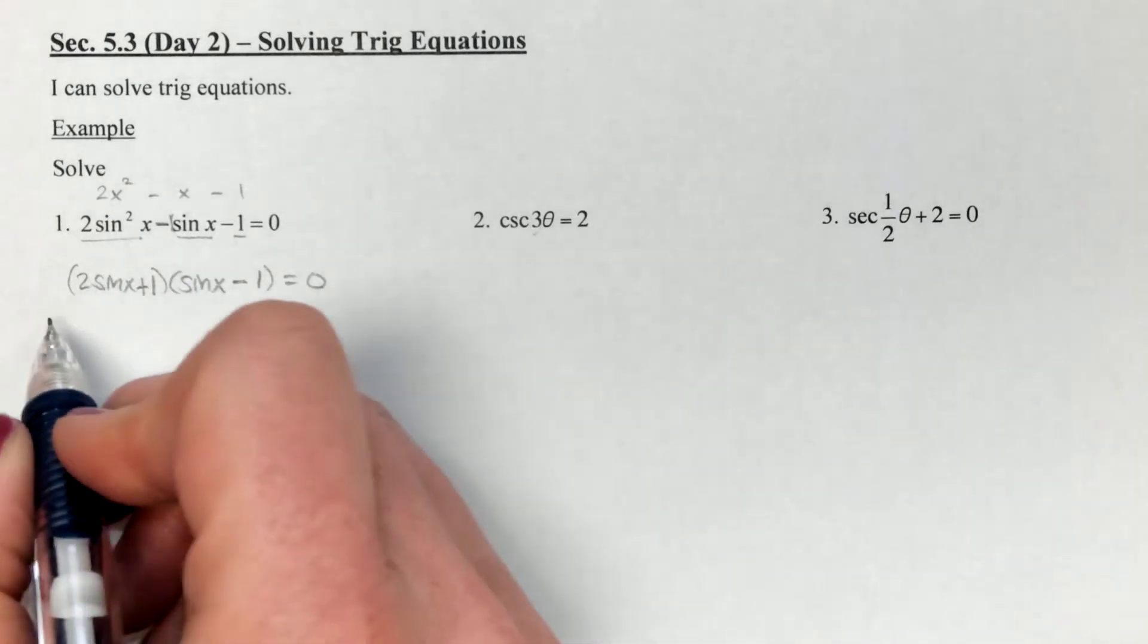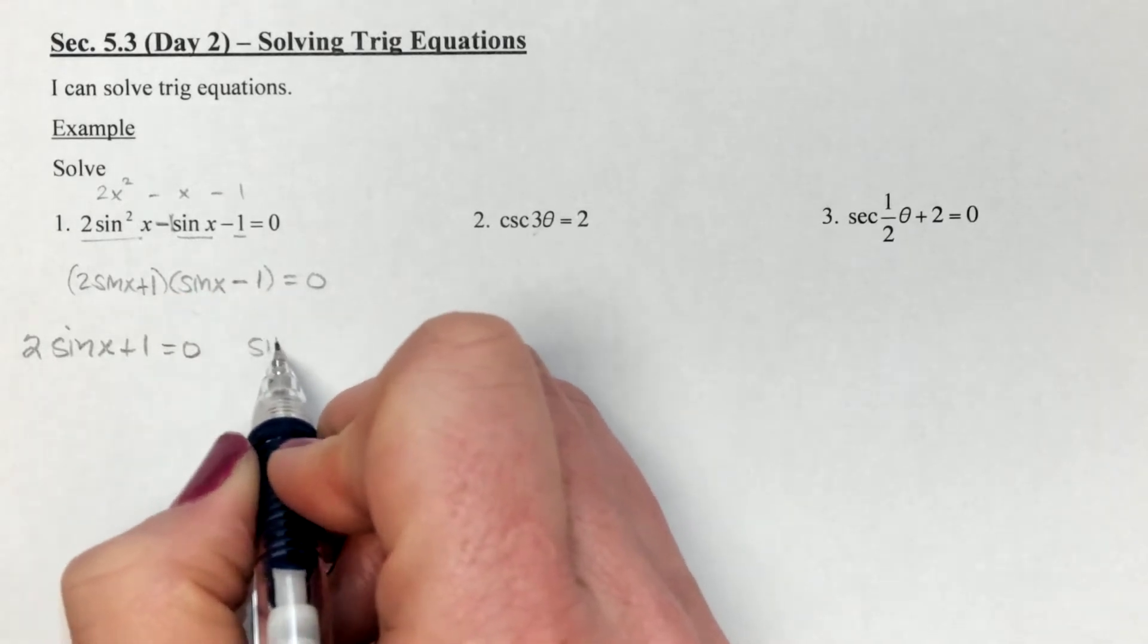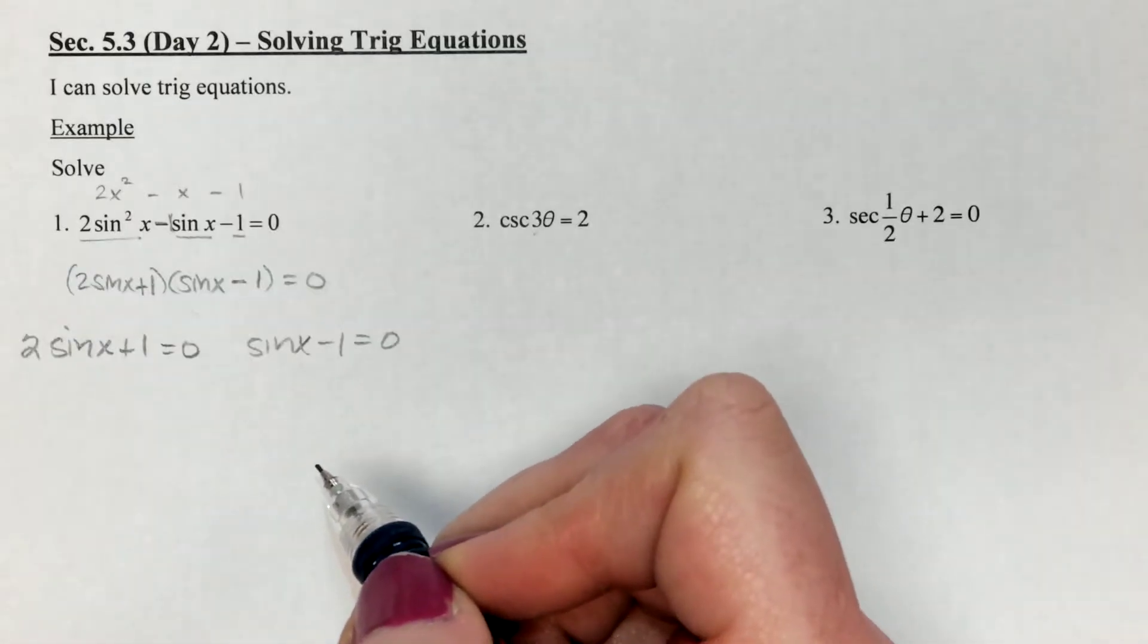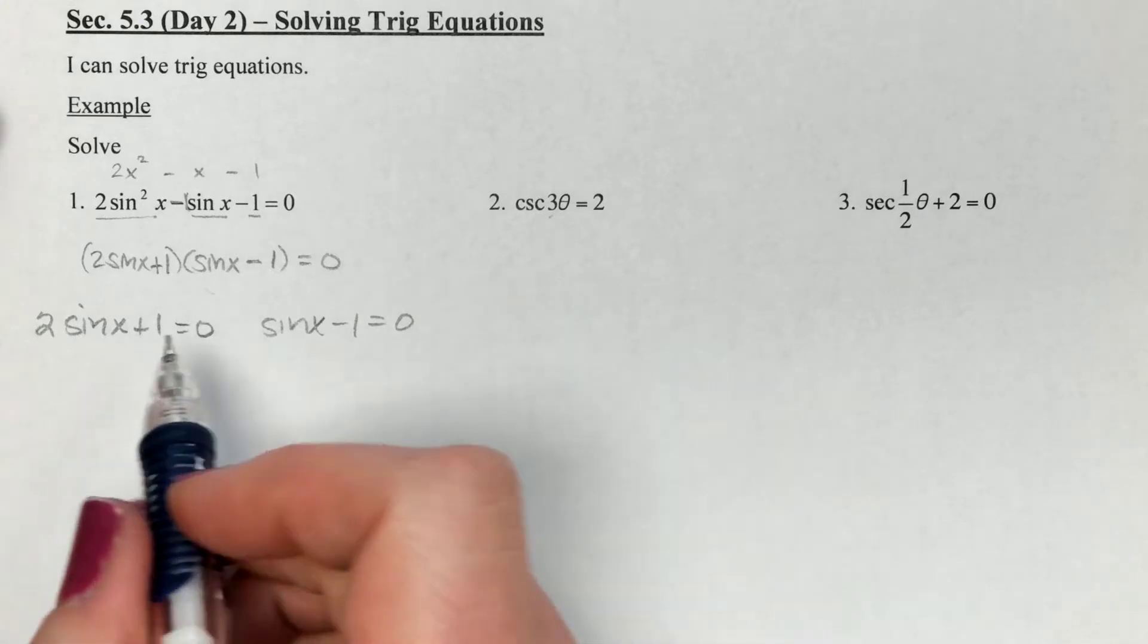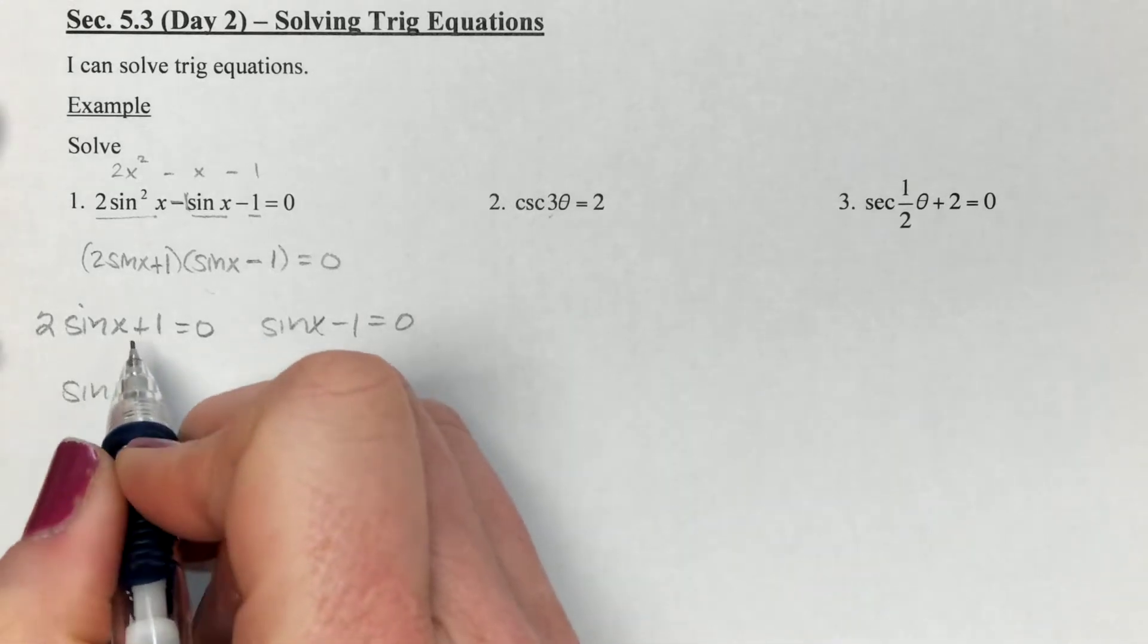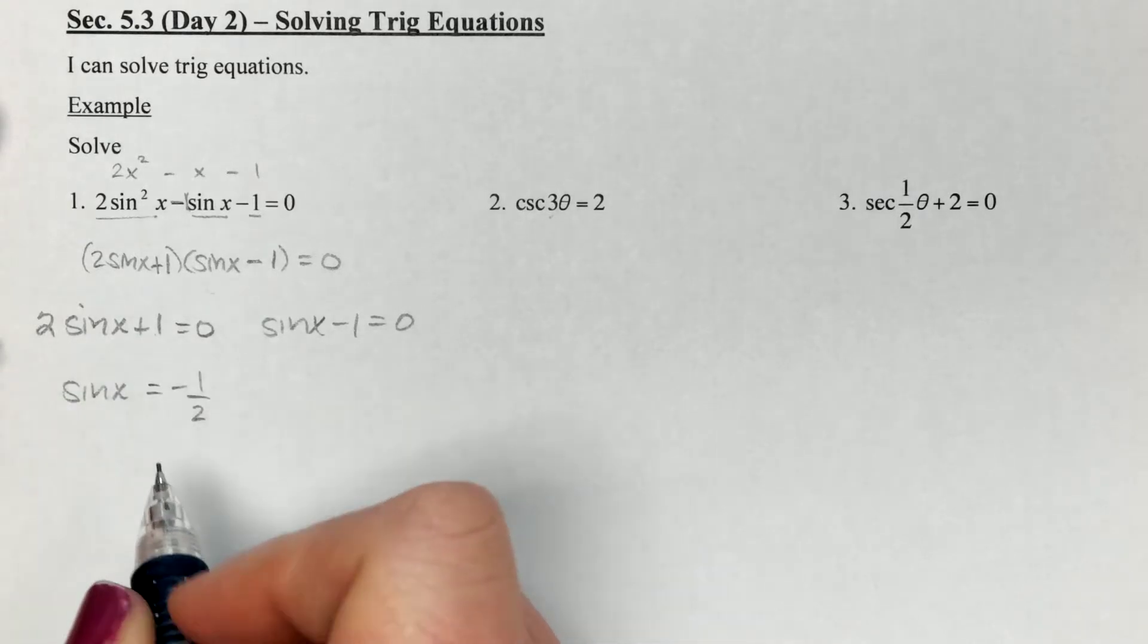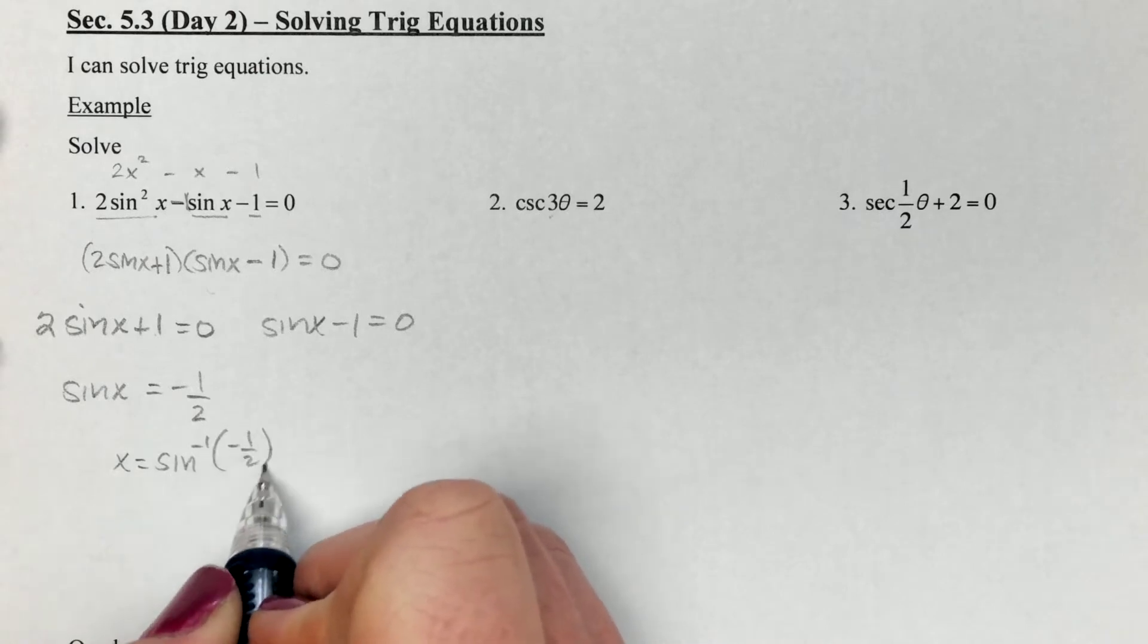Once we're factored, we take each one of those, 2sinx plus one, and set them equal to zero. We've been doing that for a while. Anytime we factor, that's how we end up solving. Taking our one, subtracting it over and dividing by two, I end up with sinx equals negative one half.